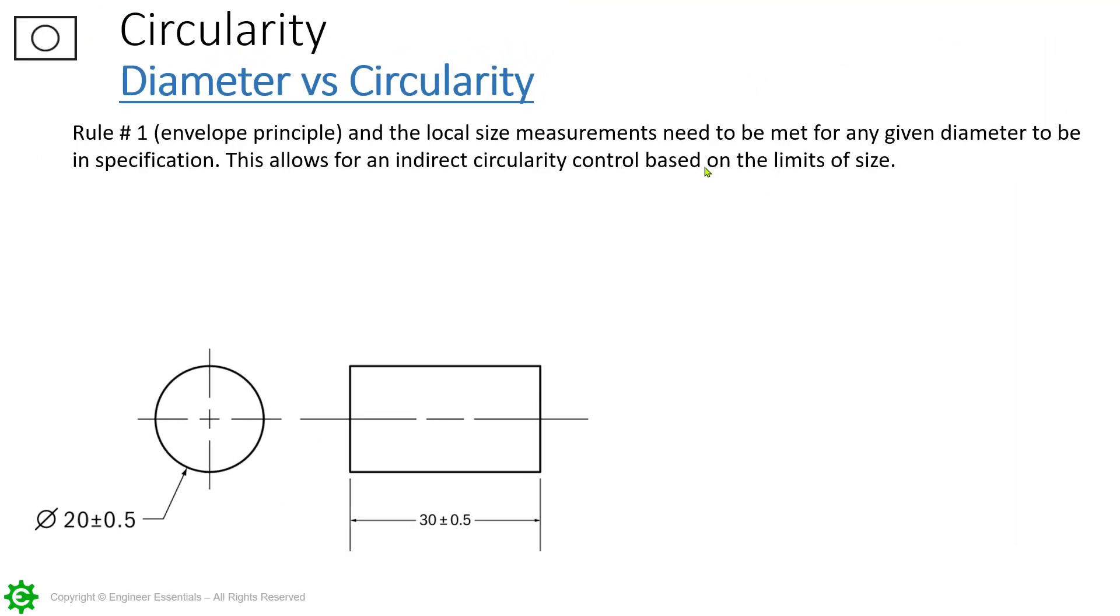Circularity - diameter versus circularity. On here I'm going to show you what it is based off of rule number one. There is no circularity call out on here but we do have a size dimension in the lower left hand corner of this drawing example that we use for circularity in our course. The size or the diameter is 20 millimeters plus or minus 0.5 and this does establish a maximum material condition of 20.5.